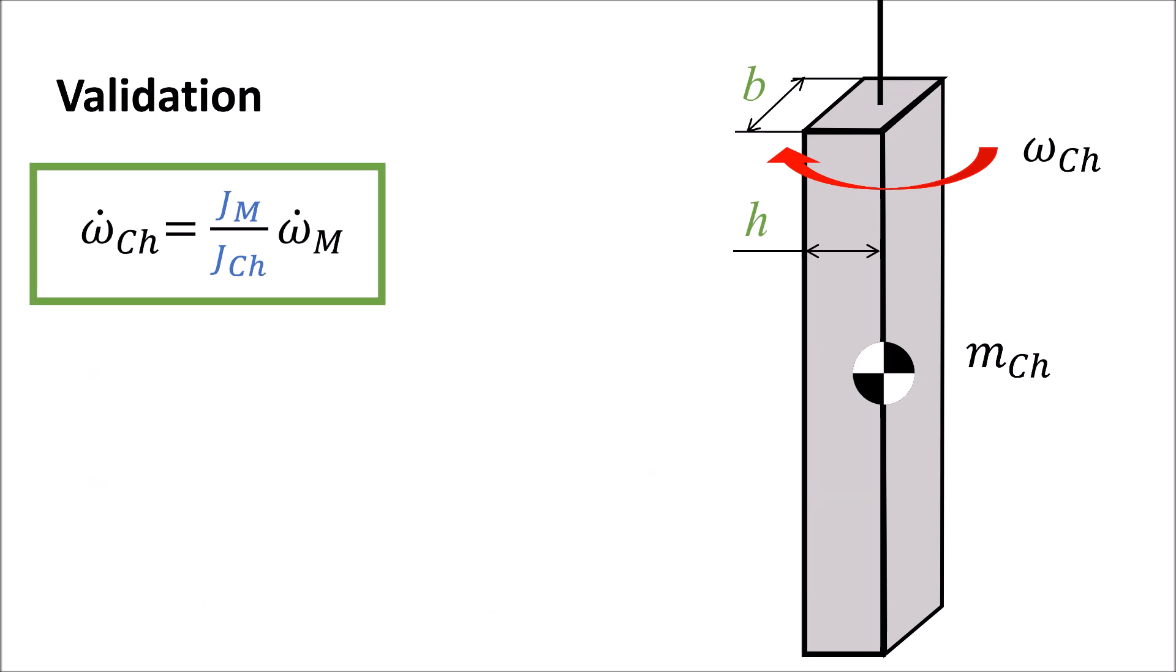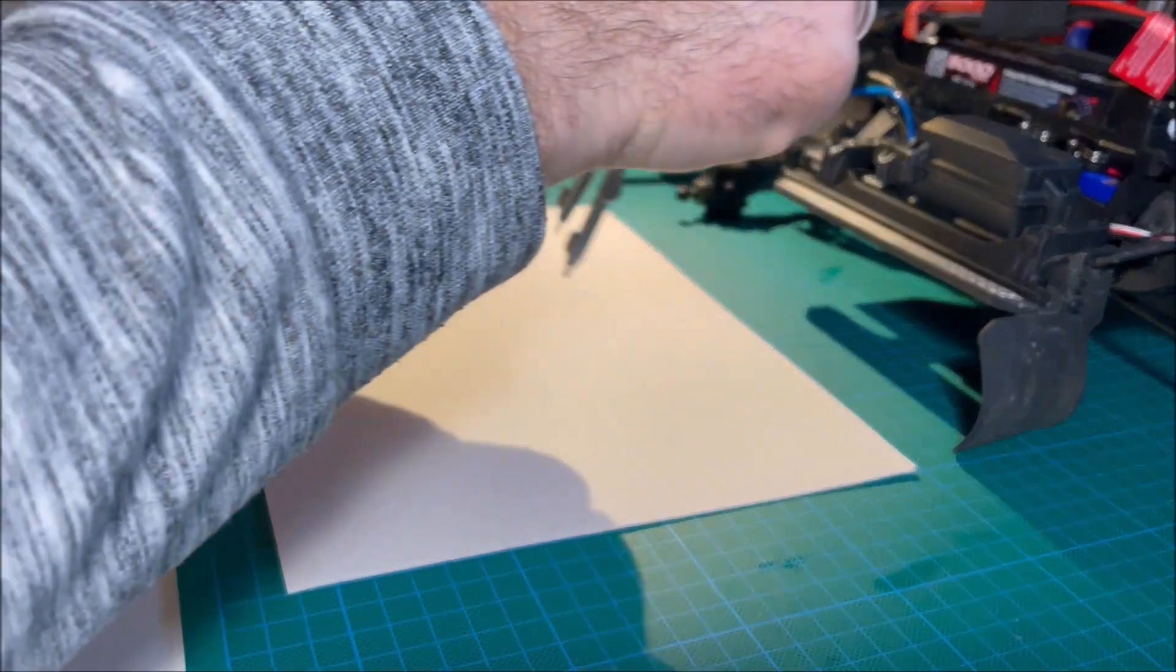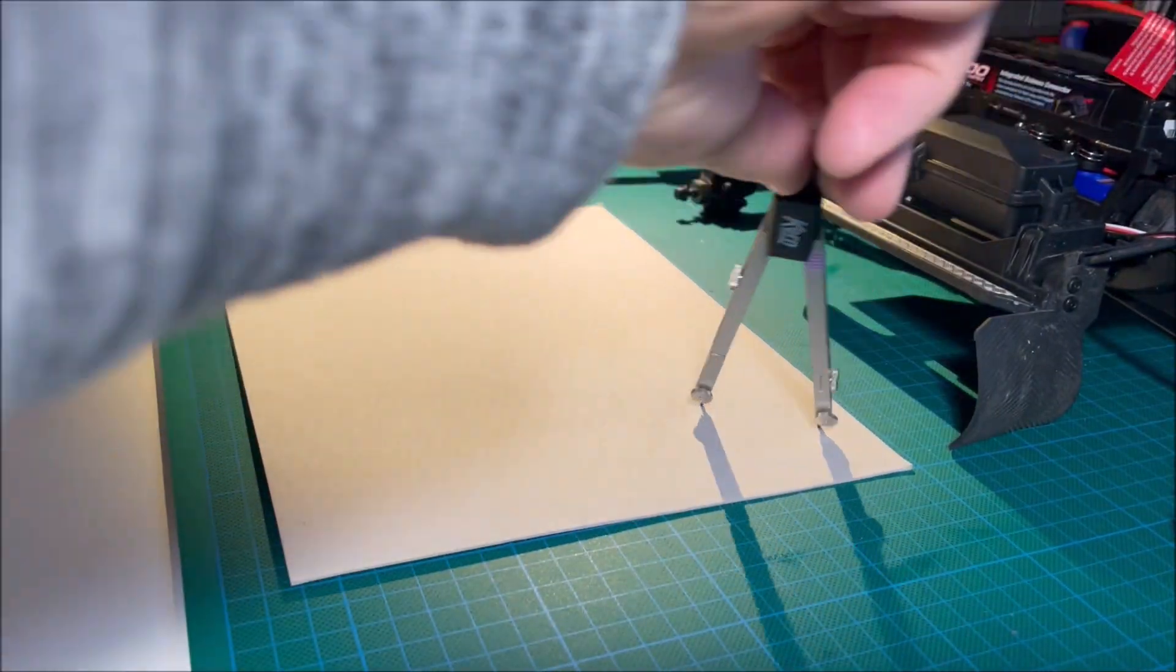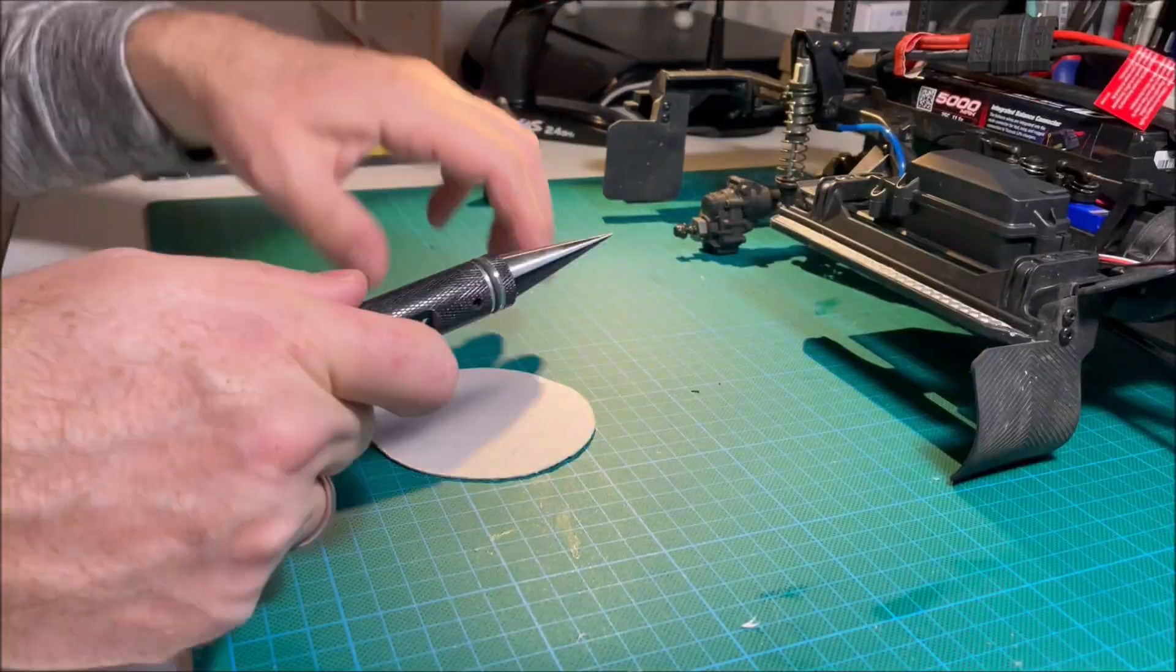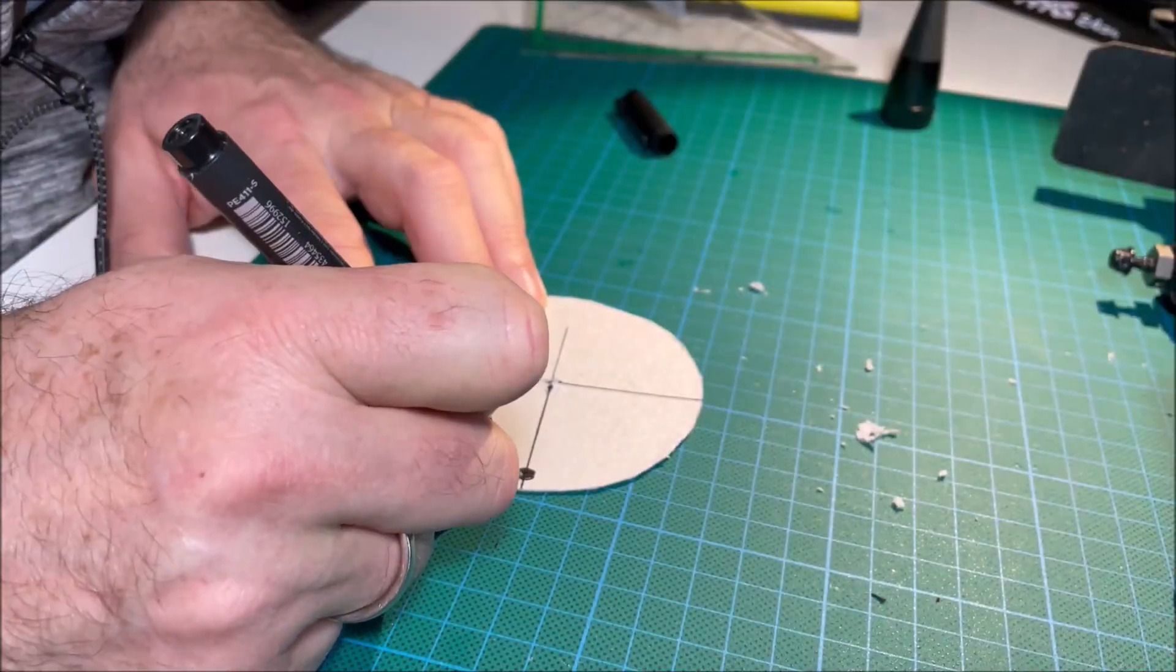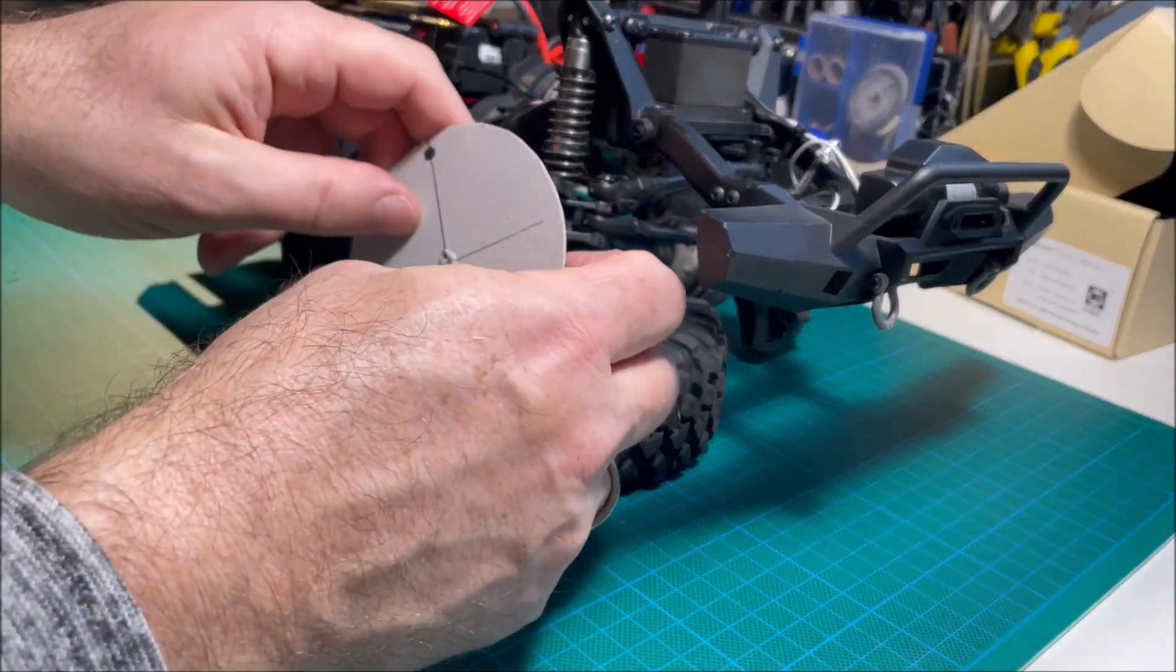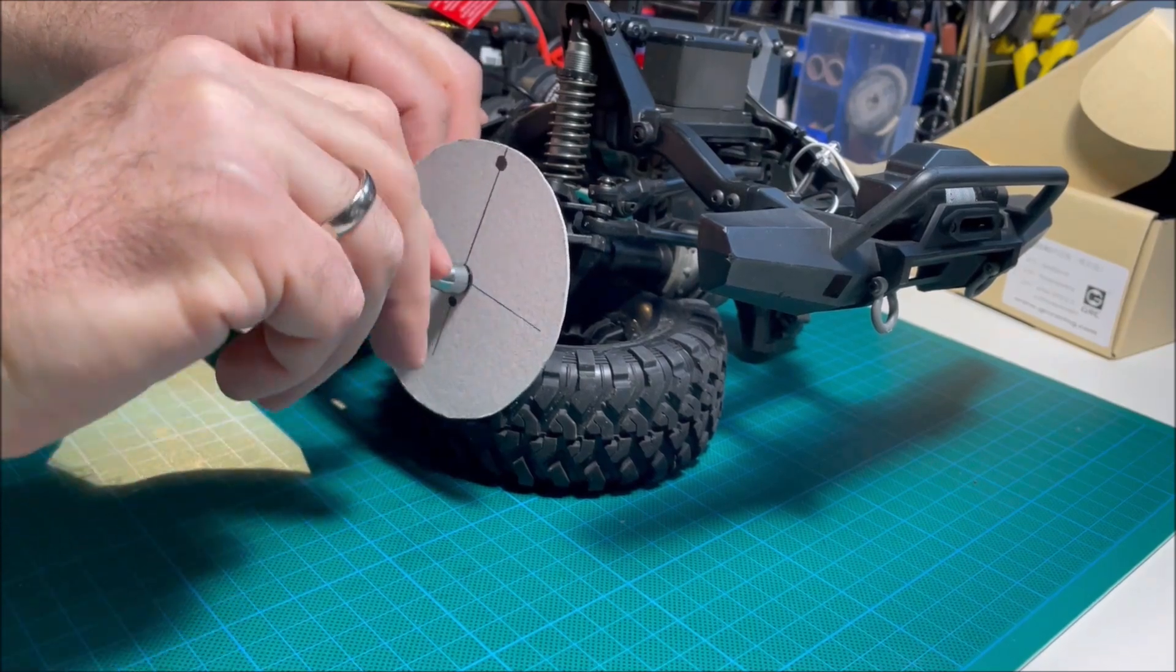But how can we get the rotational acceleration of the motor? For this, we built a light-weight fake wheel that allowed us to count the number of revolutions per second and use this value to determine angular speed and acceleration.